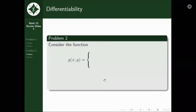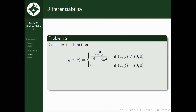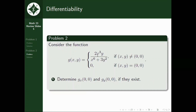For the second problem, we consider function g, which is again piecewise with the given conditions. If (x, y) = (0, 0), g is equal to 0. And if (x, y) is not equal to (0, 0), we have to consider this expression. We are also asked to determine g sub x of (0, 0) and g sub y of (0, 0), if they exist, and again to show that g is not differentiable at (0, 0).